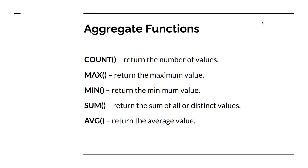The aggregate functions are: COUNT, MAX, MIN, SUM, and AVG. COUNT returns the number of values and always skips NULL values. MAX returns the maximum value — it can be of type character, float, or integer. For numerical types it returns the maximum number; for character types it applies lexical sorting and returns the string with the highest ASCII value.